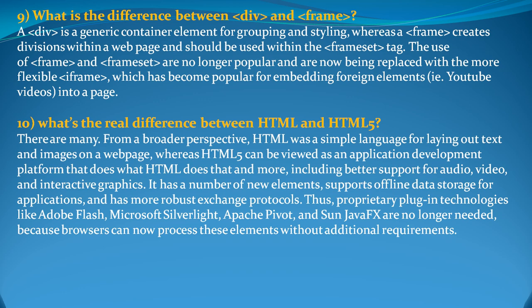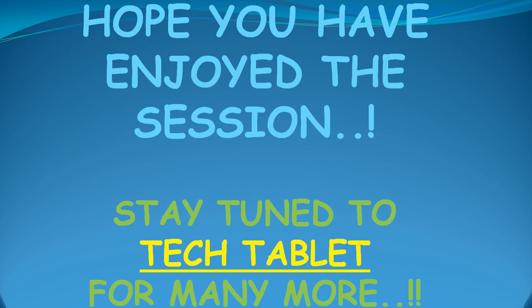What is the real difference between HTML and HTML5? There are many differences, but broadly: HTML was just a language for laying out text and images on a web page. HTML5, however, can be viewed as an application development platform as well, which HTML was not able to do. HTML5 has much better support for video, audio, and interactive graphics, many new elements, and supports offline data storage for applications. It also has a more robust exchange protocol. As a result, proprietary plugin technologies like Adobe Flash, Microsoft Silverlight, Apache Pivot, or Sun Java effects are no longer required, as browsers can now process these elements without additional plugins.